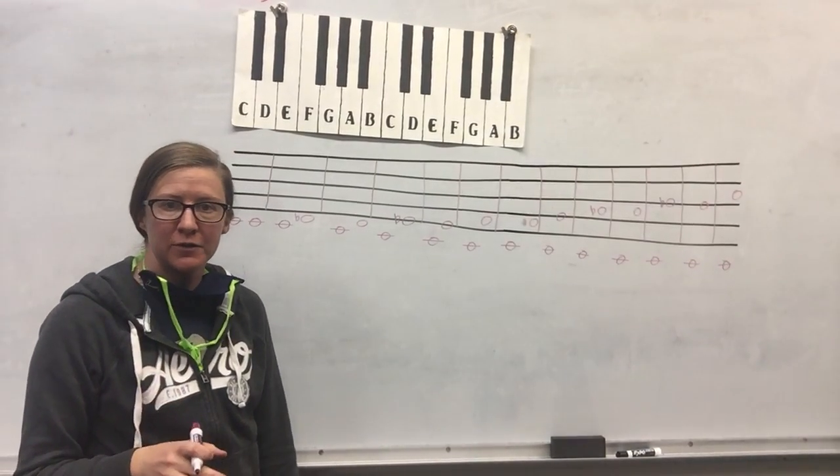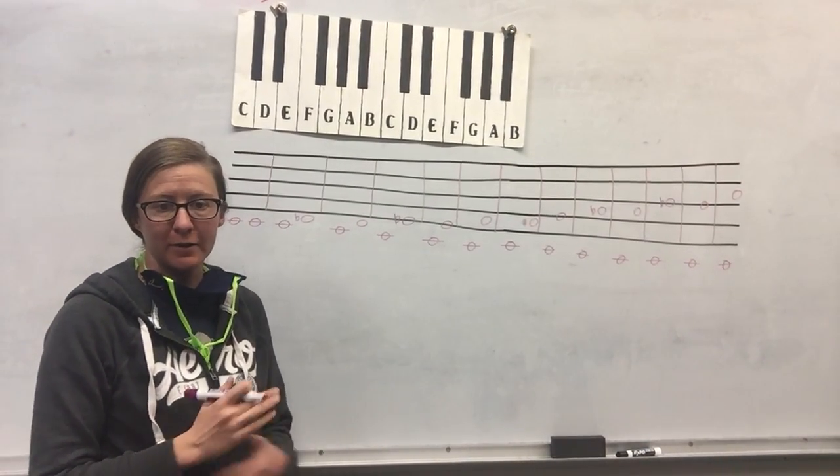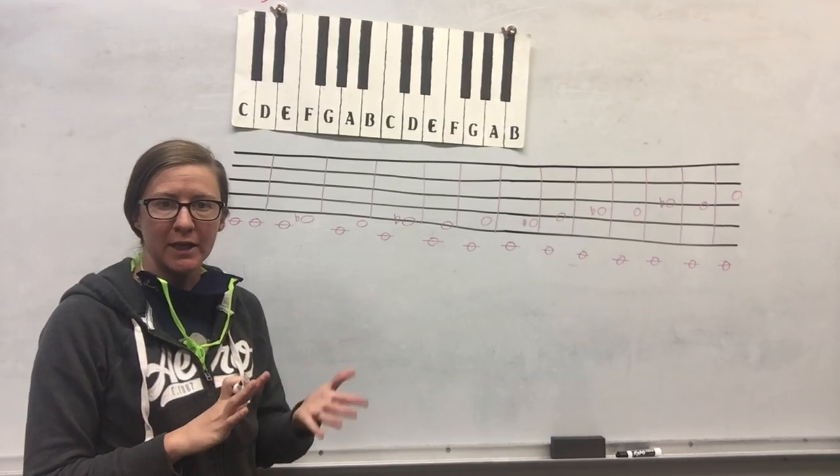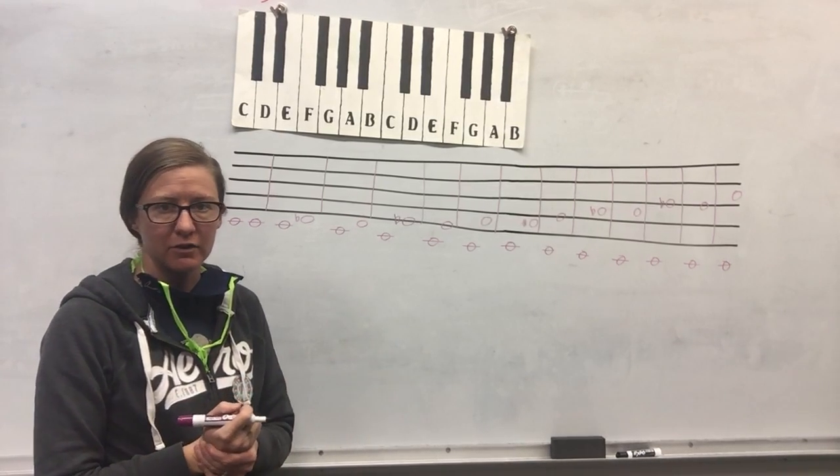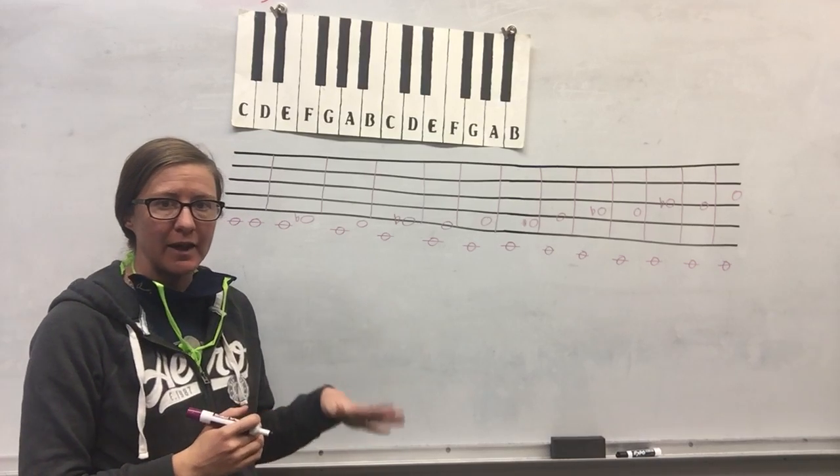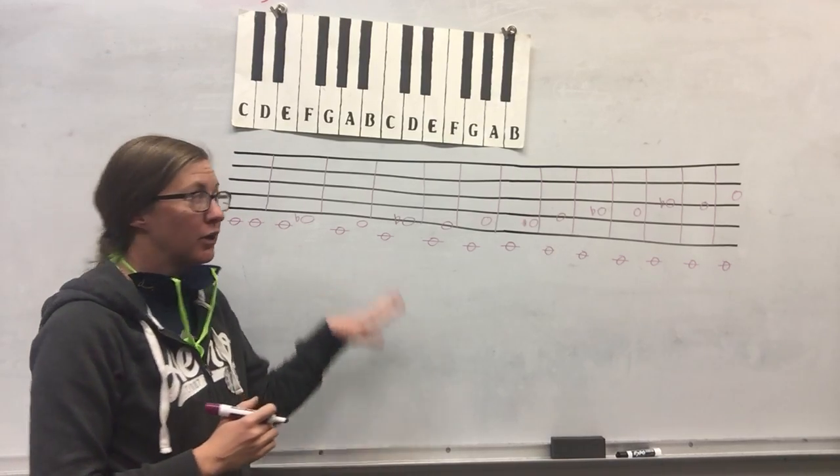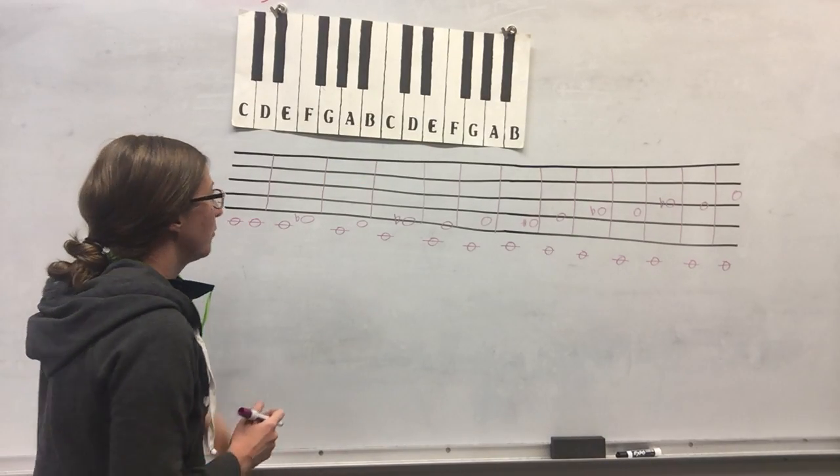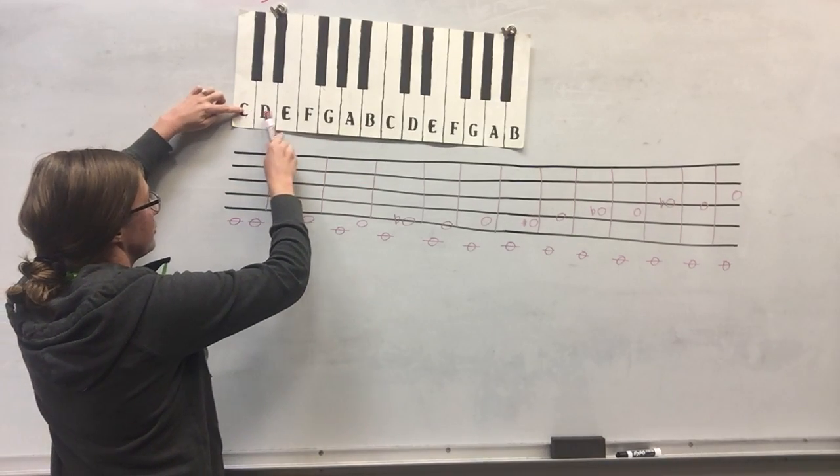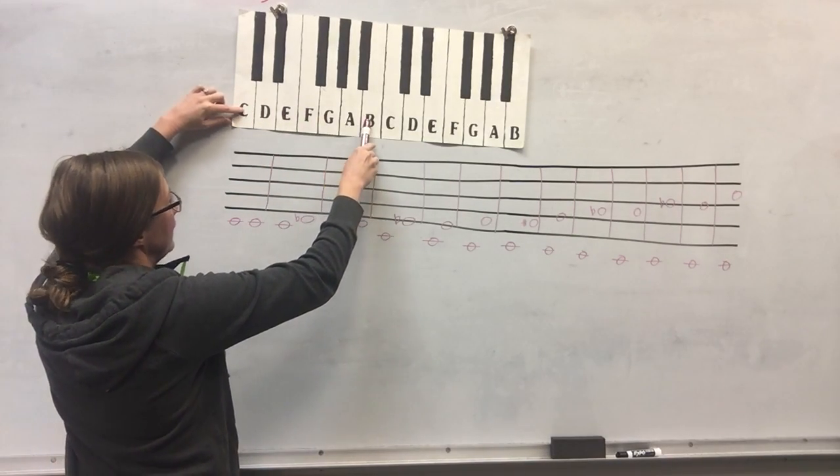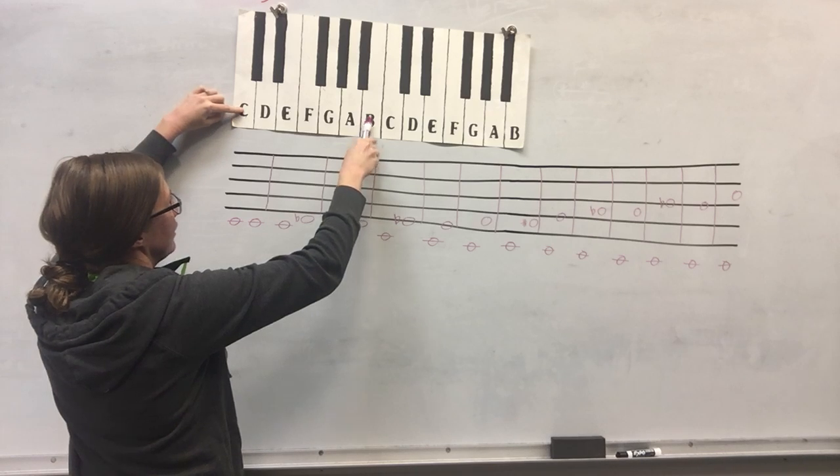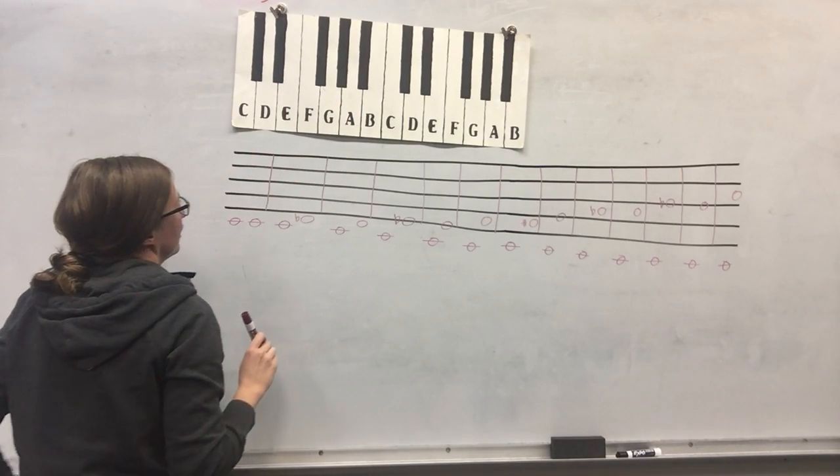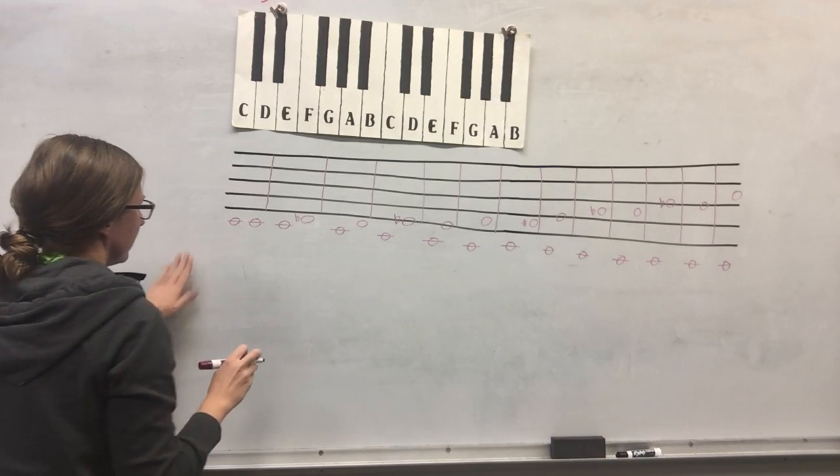We're going to talk about intervals now. We've talked about how to count them in my class before, but this is dealing with the minor, major, and perfect quality of intervals. This is dealing with every single note that we have from C to C - those seven letters one, two, three, four, five, six, seven - but then we also have one, two, three, four, five more sharps and flats in there.